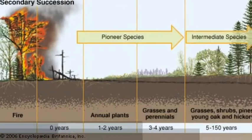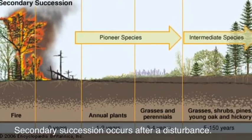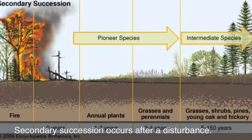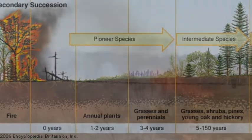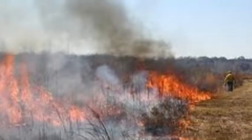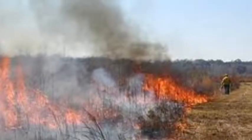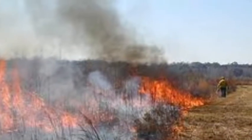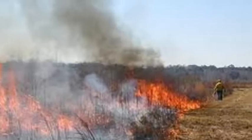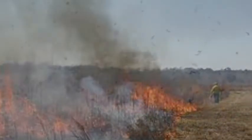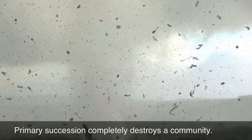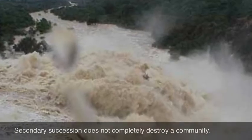Secondary succession occurs when a disturbance affects the community without completely destroying it — for example, a wildfire. The difference between primary and secondary succession is that primary succession completely destroys the community, while secondary succession does not.